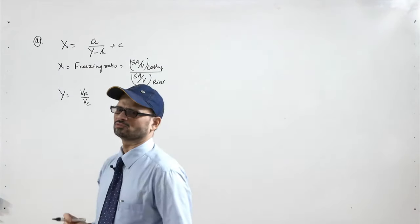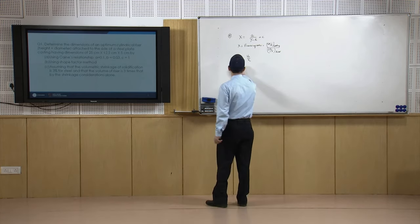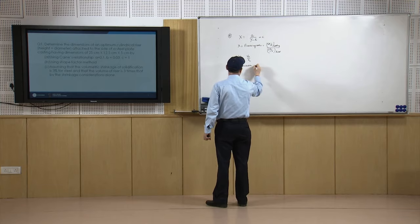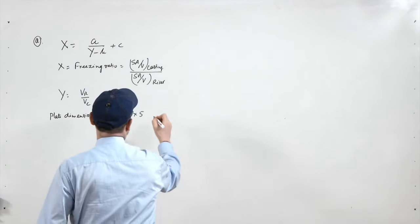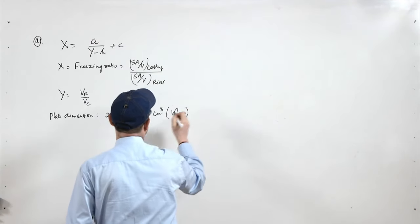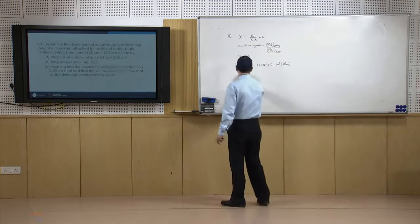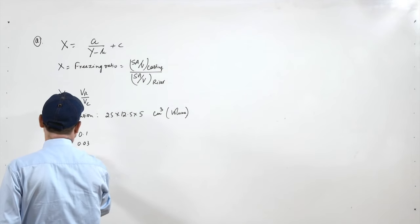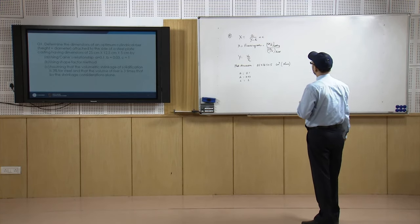And y is the volume ratio, that is volume of riser upon volume of casting. The plate dimension is 25 by 12.5 by 5 centimeter cube, so that is the volume of the plate. The constants are given as a equal to 0.1, b equal to 0.03, and c equal to 1. We have to calculate x and y.